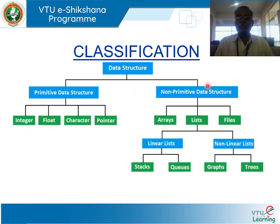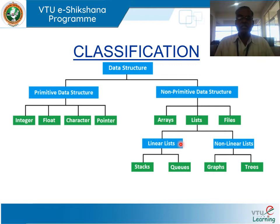Non-primitive data structures are further classified into two categories: linear and non-linear. Linear data structures store data in a linear or sequential fashion. Examples include arrays, stacks, queues, lists, and files.